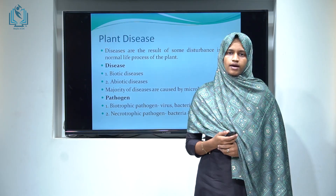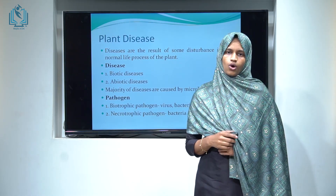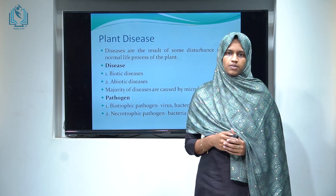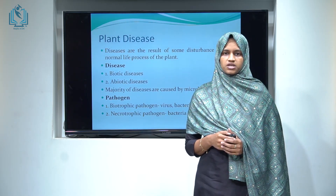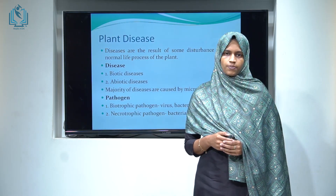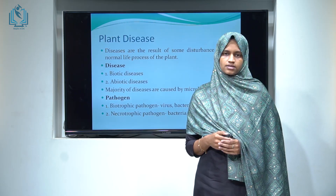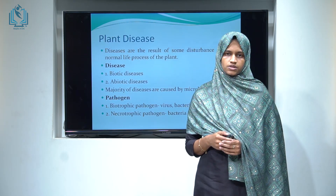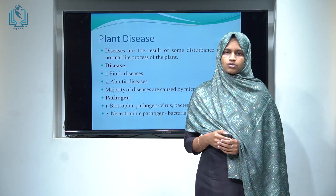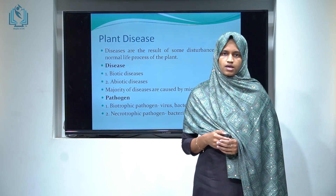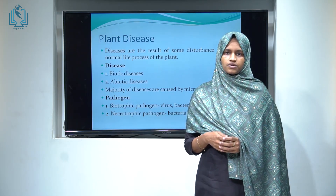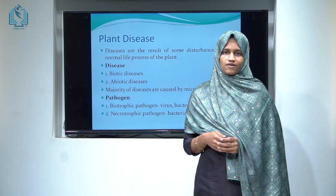Plant diseases are identified by both common name and scientific name. The scientific name identifies both the genus and species of the disease-causing agent. The pathogens involved in plant disease are classified into two types. First, biotrophic pathogens — these are pathogens that derive nutrients from the living host tissue. Second, necrotrophic pathogens — these are pathogens that derive nutrients from dead or dying cells.